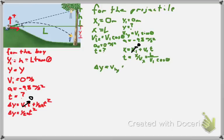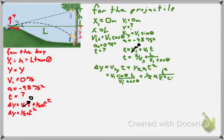We get delta y equals v_iy t plus 1/2 a t squared. Using these equations together, we get v_i sine theta over v_i cosine theta times L plus 1/2 a t squared over v_i cosine theta. The v_i's cancel. Sine over cosine is tangent. So what we're going to get is delta y equals L tangent theta plus a t squared over 2 v_i squared cosine squared theta.